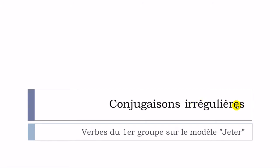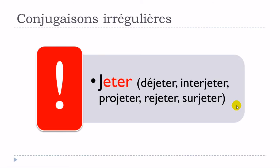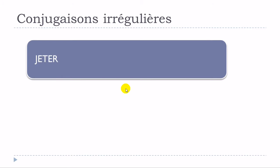Les conjugaisons irrégulières — we'll see especially the verbs that will be constructed based on 'jeter'. So you've got 'jeter', and then verbs like 'déjeter', 'interjeter', 'projeter', 'rejeter', 'surjeter' — they are from the same family. That's the reason why we will see the example of 'jeter', which means 'to throw something' or 'to pitch something' — it could be a ball or a stone, whatever.